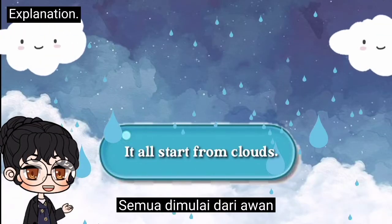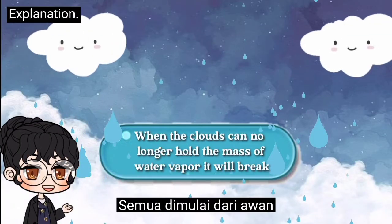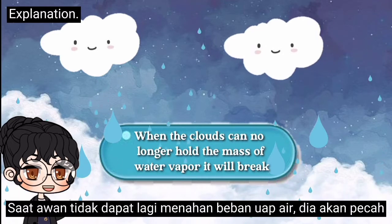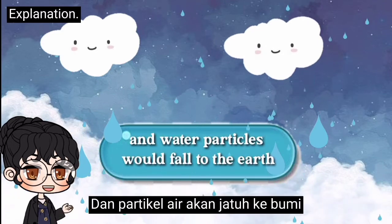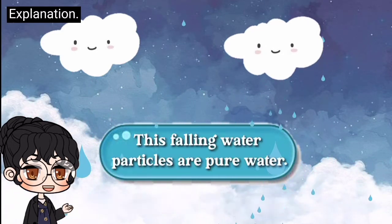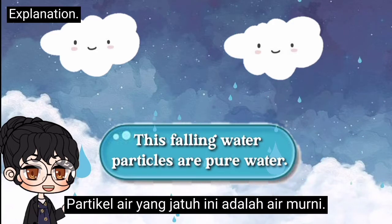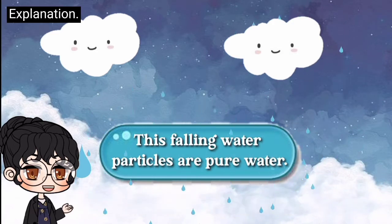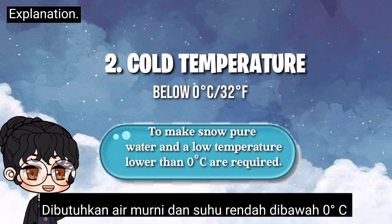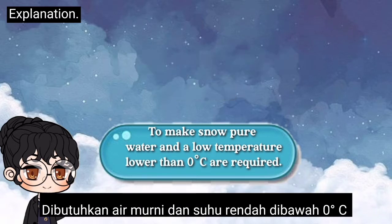It all starts from clouds. When the clouds can no longer hold the mass of the water vapor, it will break and water particles would fall to the earth. These falling water particles are pure water. To make snow, pure water and low temperature — lower than zero degrees Celsius — are required.